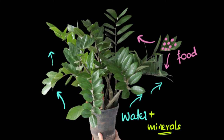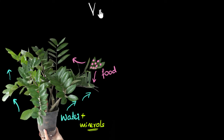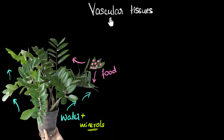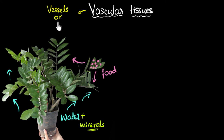Eventually plants evolved these transport systems. Today they are called vascular tissues. The word 'vascular' means vessels — I like to think of them as pipes. So it's a piping system through which plants can move food and water all around their body. And just like the name suggests, they look like pipes — pipes that start from the roots and go all the way to each and every leaf.